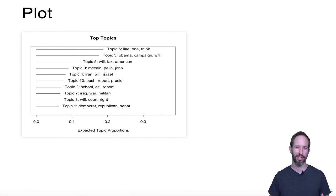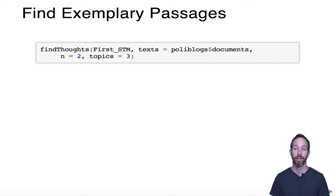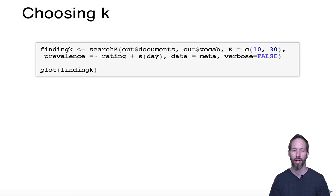Let's figure out how we do that. The first thing we might want to do is just inspect a few of the topics. This find thoughts function is really handy for doing that. This allows you to pass the output of the topic model, the full text, and then look for, in this case, two examples of topic number three, and it will pull up passages of those documents that load really high to help you try to figure out what that topic actually is.